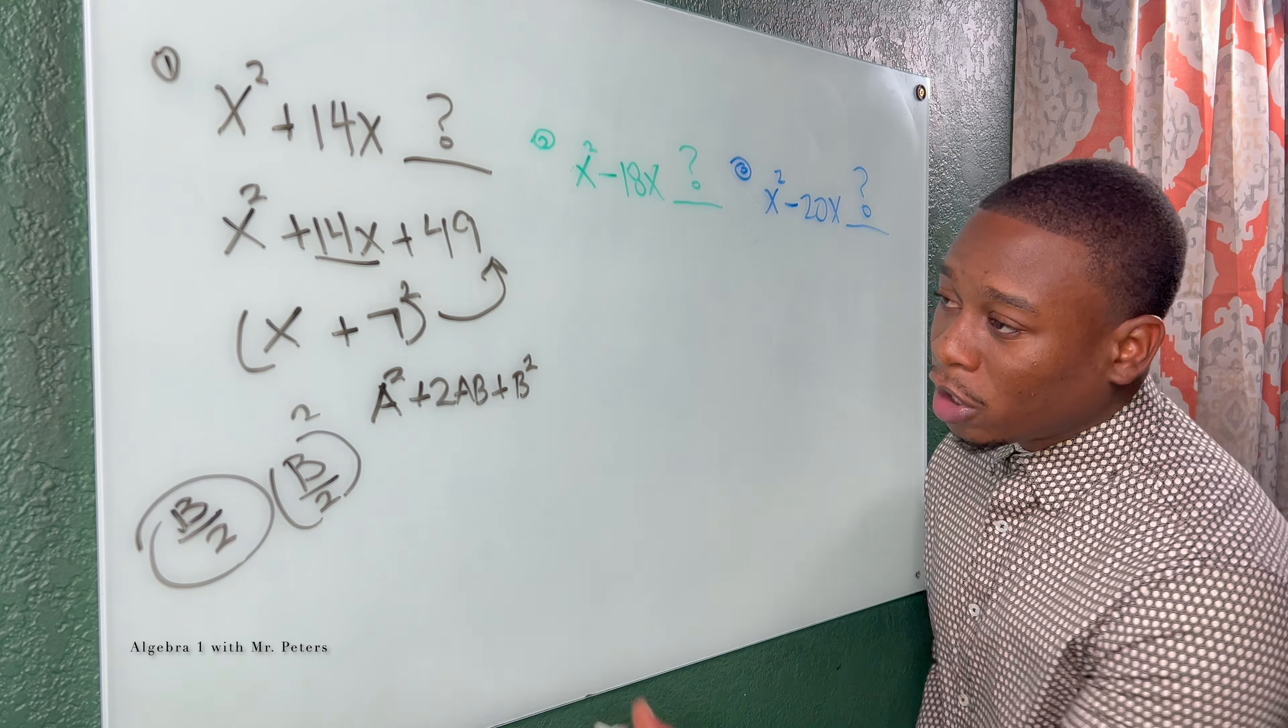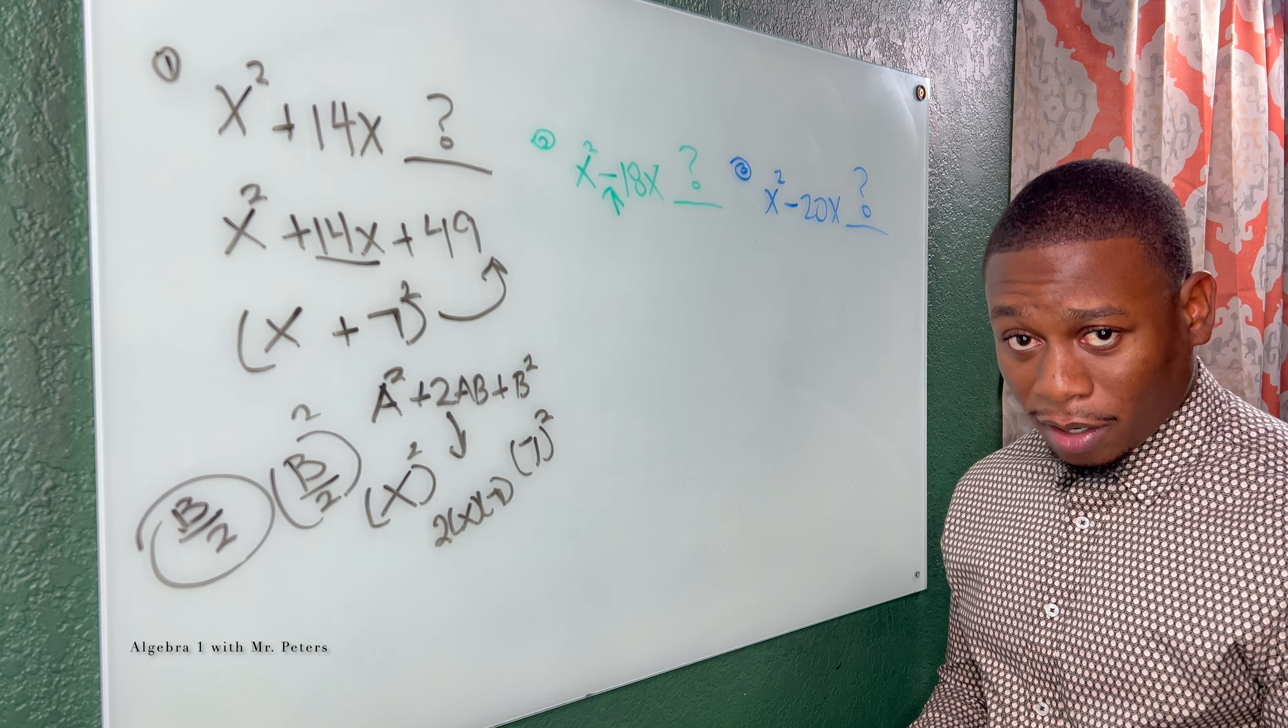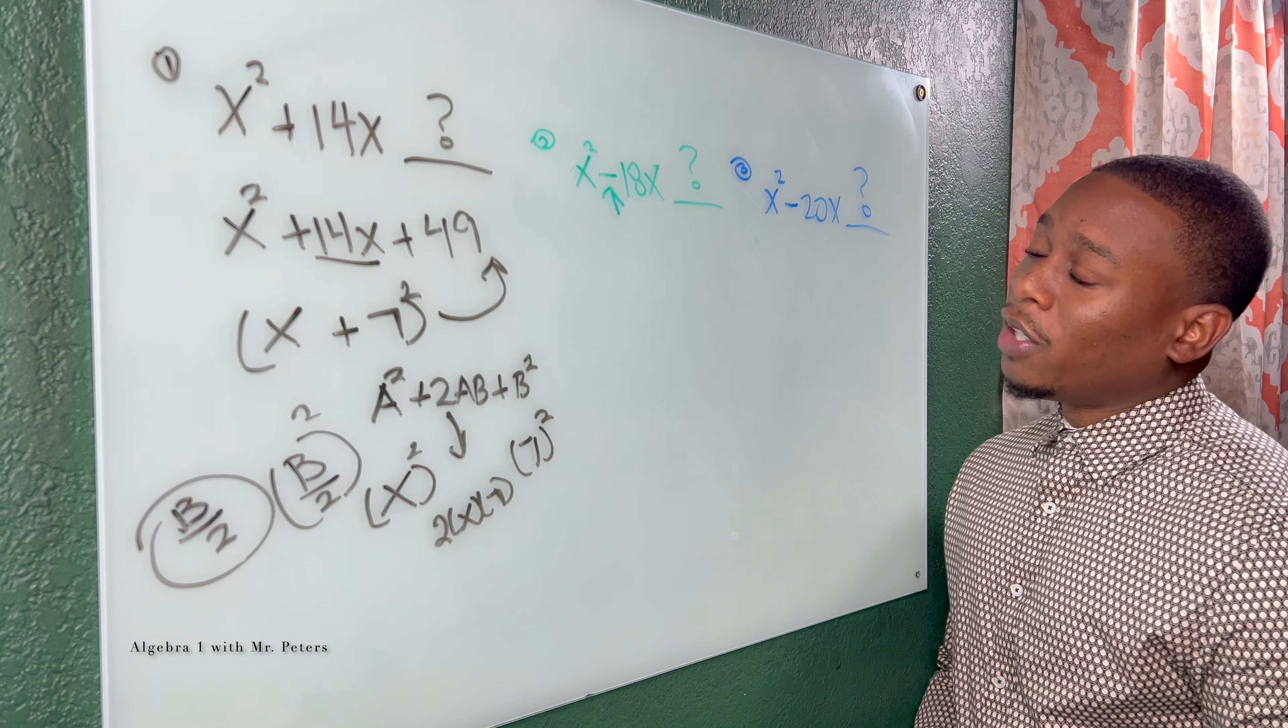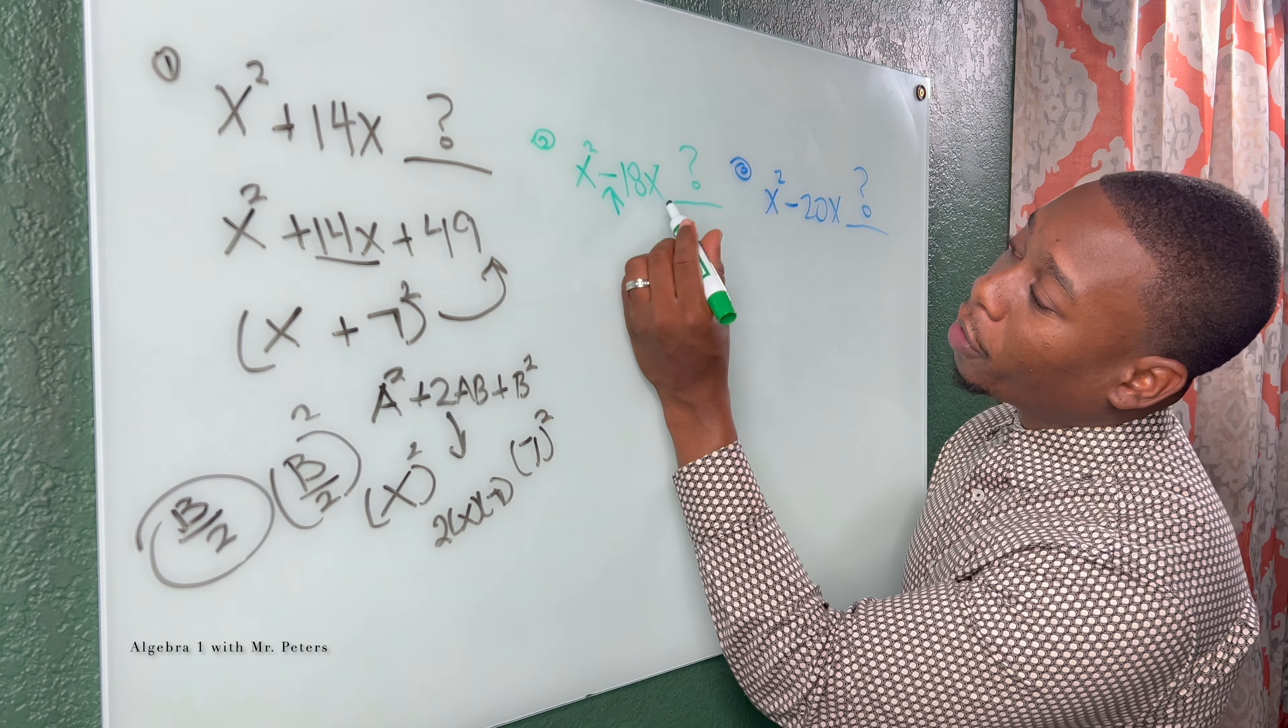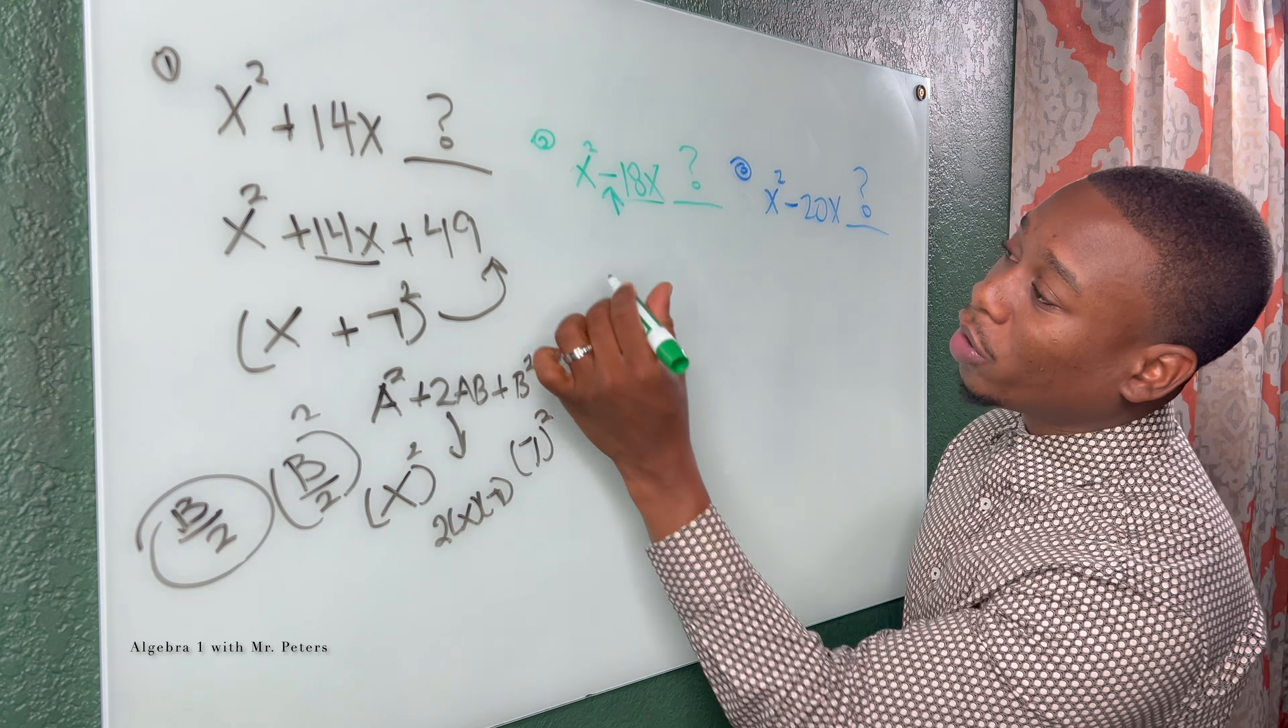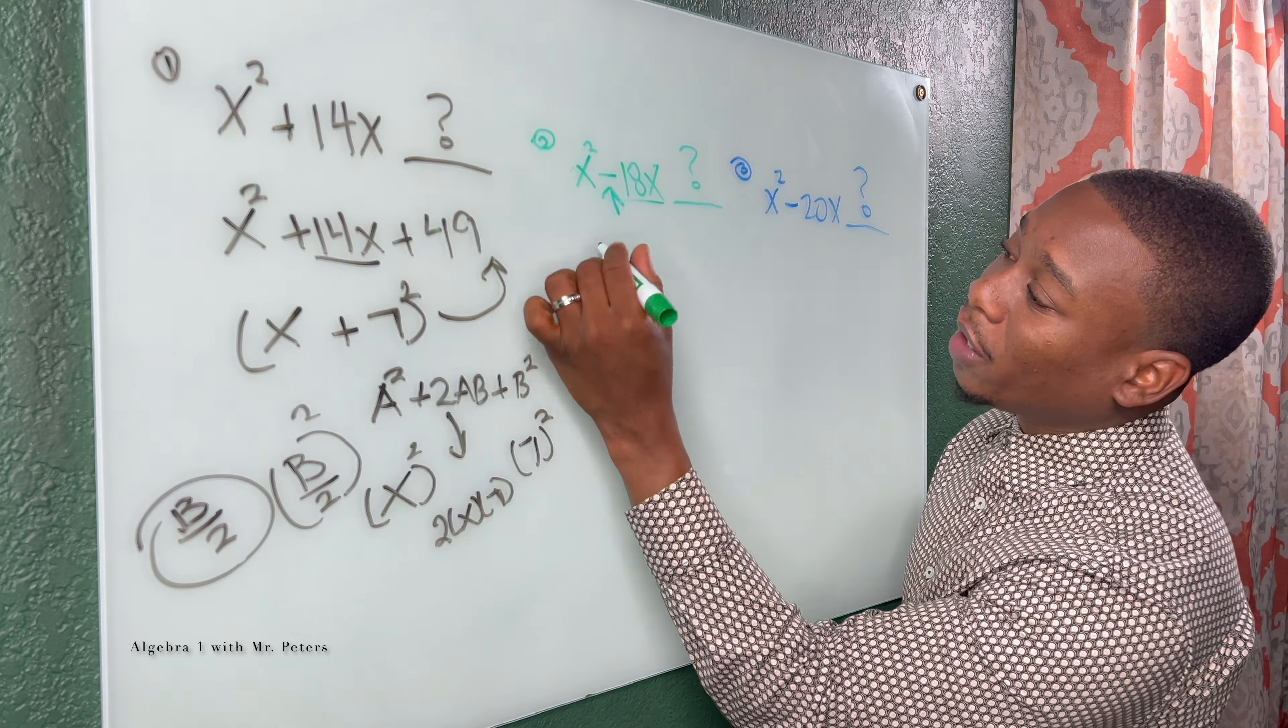Problem 2. Same exact thing but just remember there is a negative sign in front of b. So we have to make sure we take that into account when we write the binomial. So half of 18 is 9, 9 squared is 81. So this turns into x squared minus 18x plus 81. If I want to know the binomial that will give me this trinomial, just take half of b. So x minus 9 squared is going to be the binomial that gives me the perfect square trinomial.